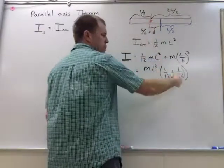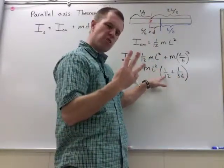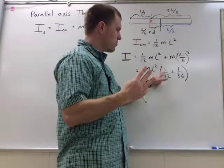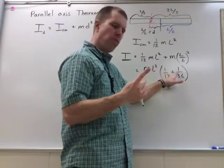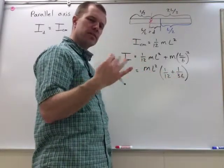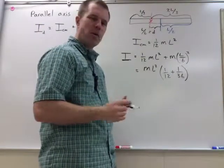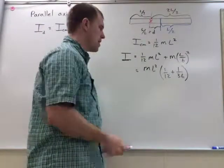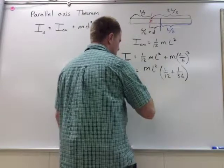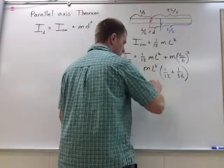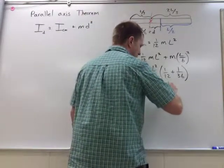A twelfth plus a thirty-sixth—well, a twelfth is really three-thirty-sixths. So I have three-thirty-sixths plus one-thirty-sixth, which gives me four-thirty-sixths. Thirty-six divided by four gives me, you got it, nine. So I'm left with, for a moment of inertia here, one-ninth m l squared.